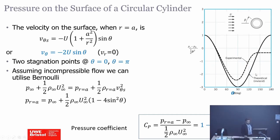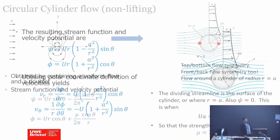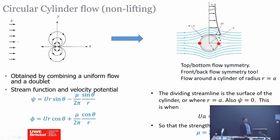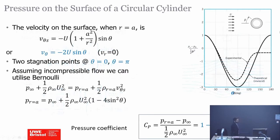Cp equal to 1 represents a stagnation point. From the graph, the stagnation points are where Cp equals 1 — at theta equals zero and theta equals 180 degrees, confirming the two stagnation points we identified. Where Cp equals zero — at roughly 30 and 150 degrees — the pressure at those points equals the free stream pressure. When the pressure at R equal to A equals P-infinity, you get Cp equal to zero.